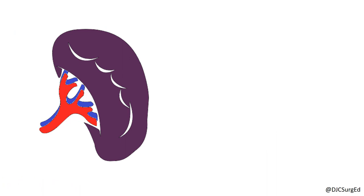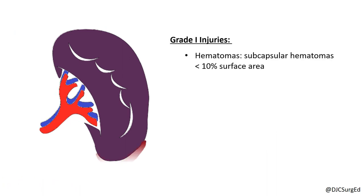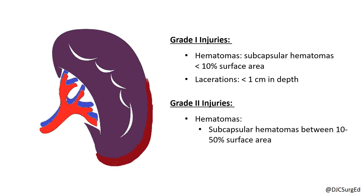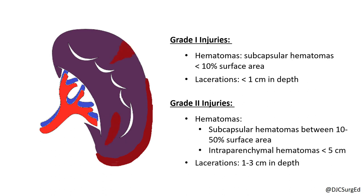Grade 1 injuries include subcapsular hematomas less than 10% of the surface area or lacerations less than 1 cm in depth. Grade 2 injuries include subcapsular hematomas between 10% and 50% of surface area, intraparenchymal hematomas less than 5 cm, or lacerations between 1 and 3 cm.